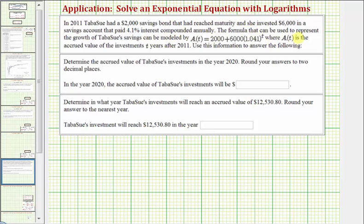The formula that can be used to represent the growth of Tabasoo's savings can be modeled by A(T) equals 2,000 plus 6,000 times 1.041 raised to the power of T, where A(T) is the accrued value of the investments T years after 2011. It's important to note here that T is the number of years after 2011, T is not the actual year.